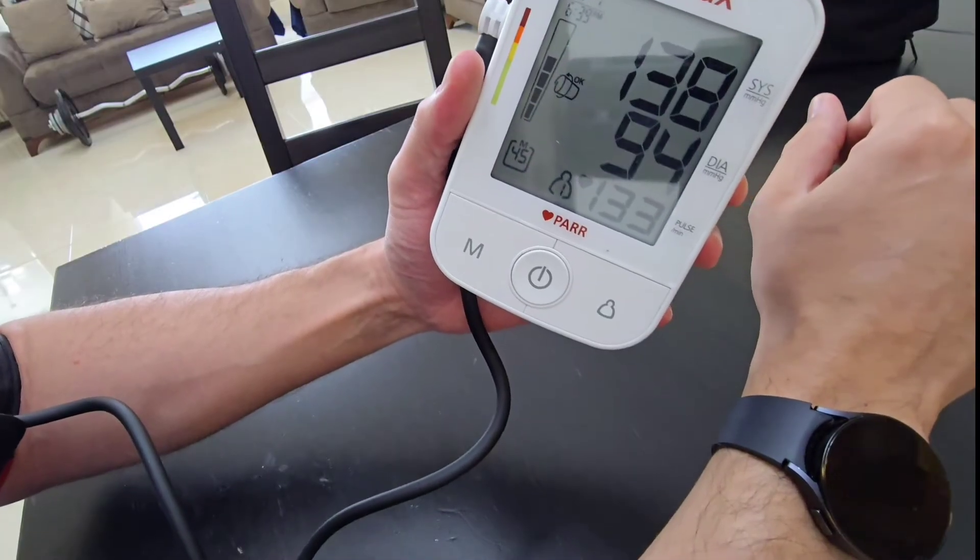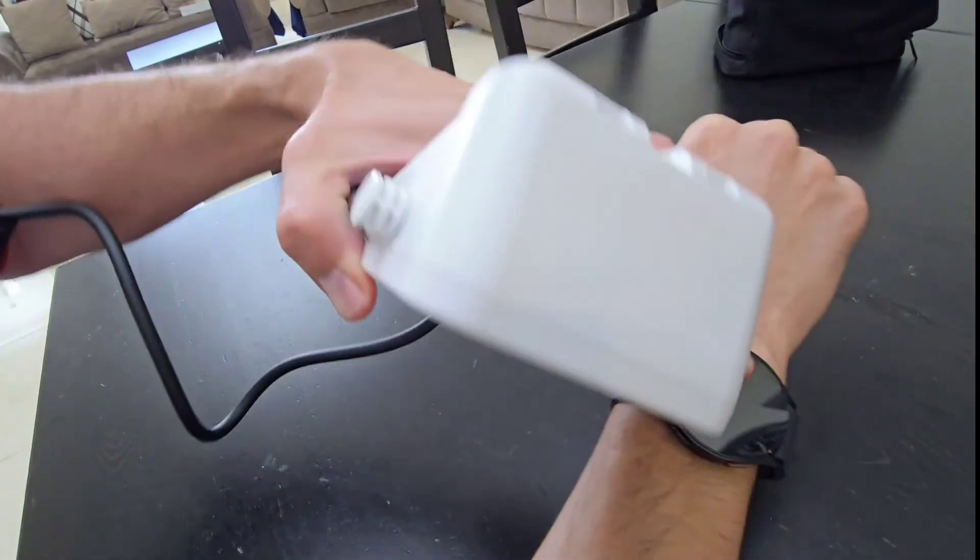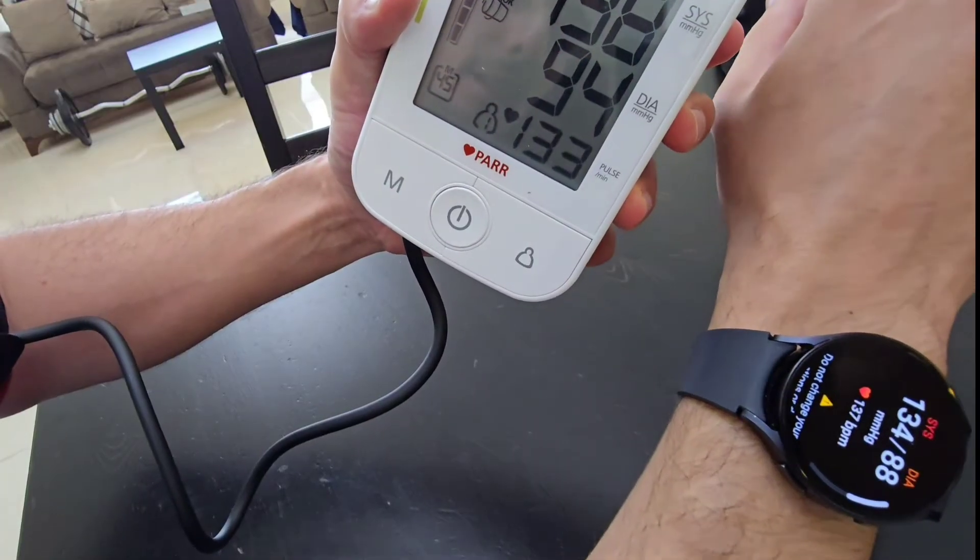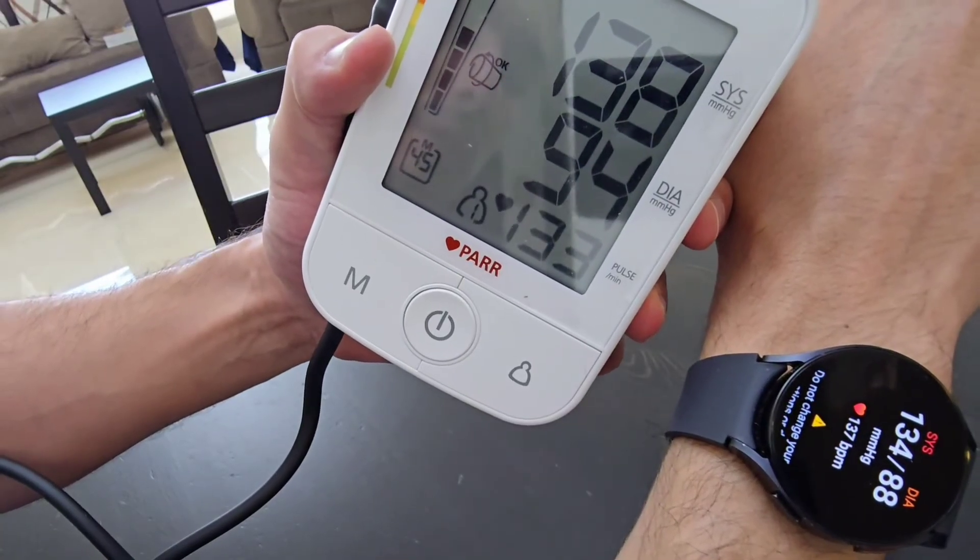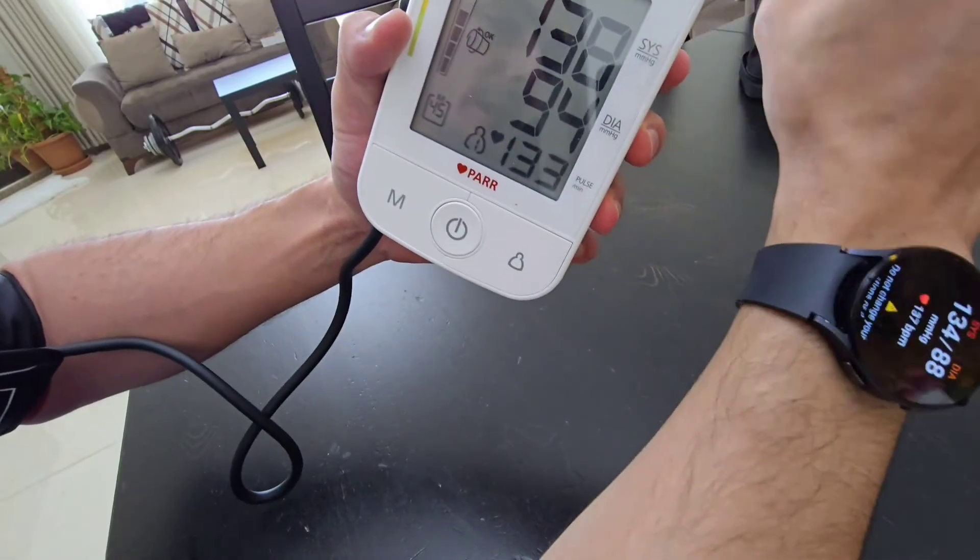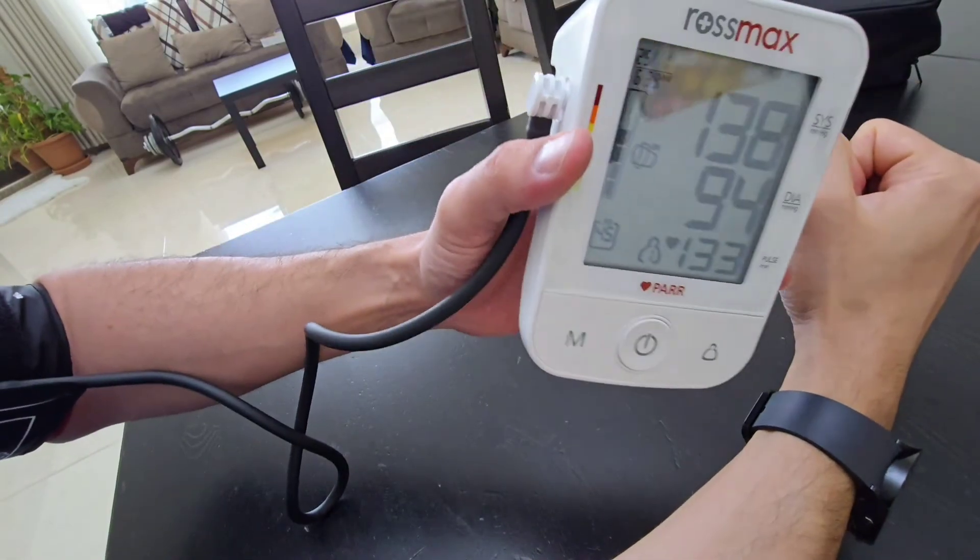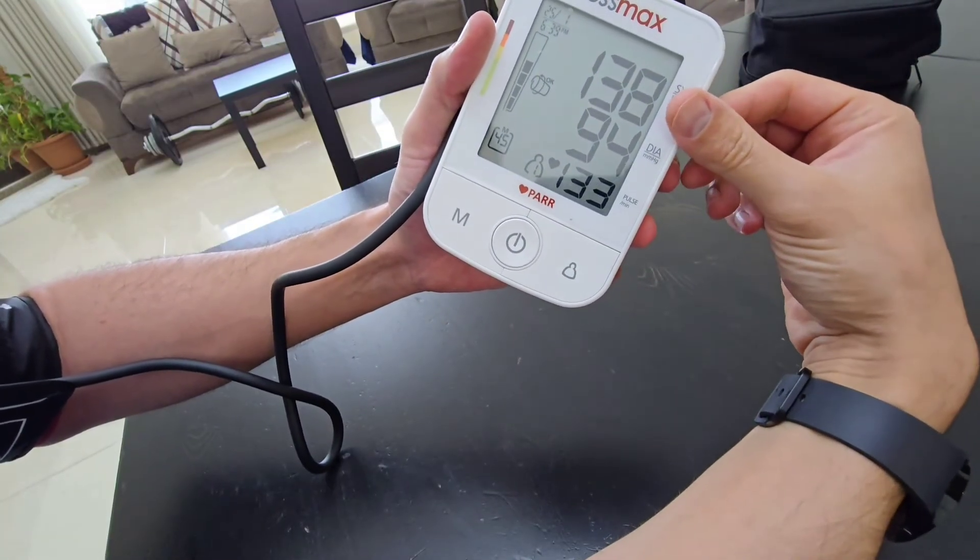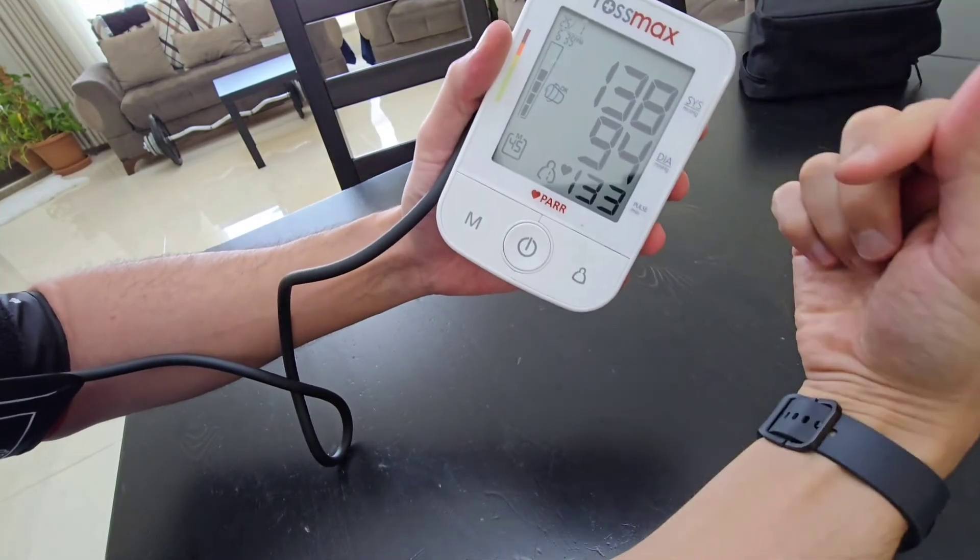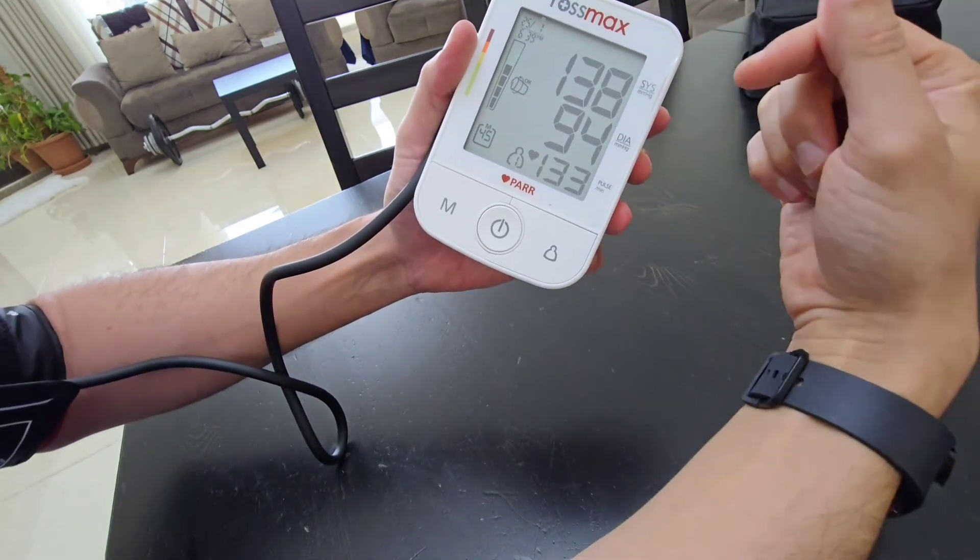So, the device says 138 over 94 and the watch says 134 over 88. And don't forget that this is on the right arm. This is on the left arm. So, there should be some sort of difference even with the blood pressure monitor itself. If you measure the left and the right, there's going to be like plus or minus maybe 10.